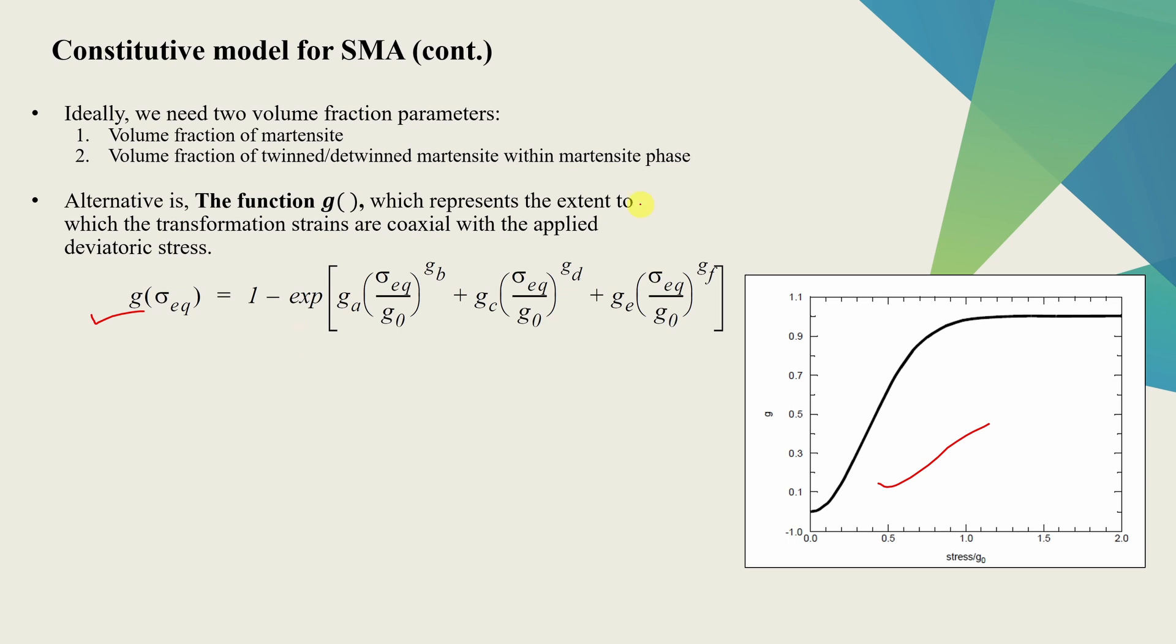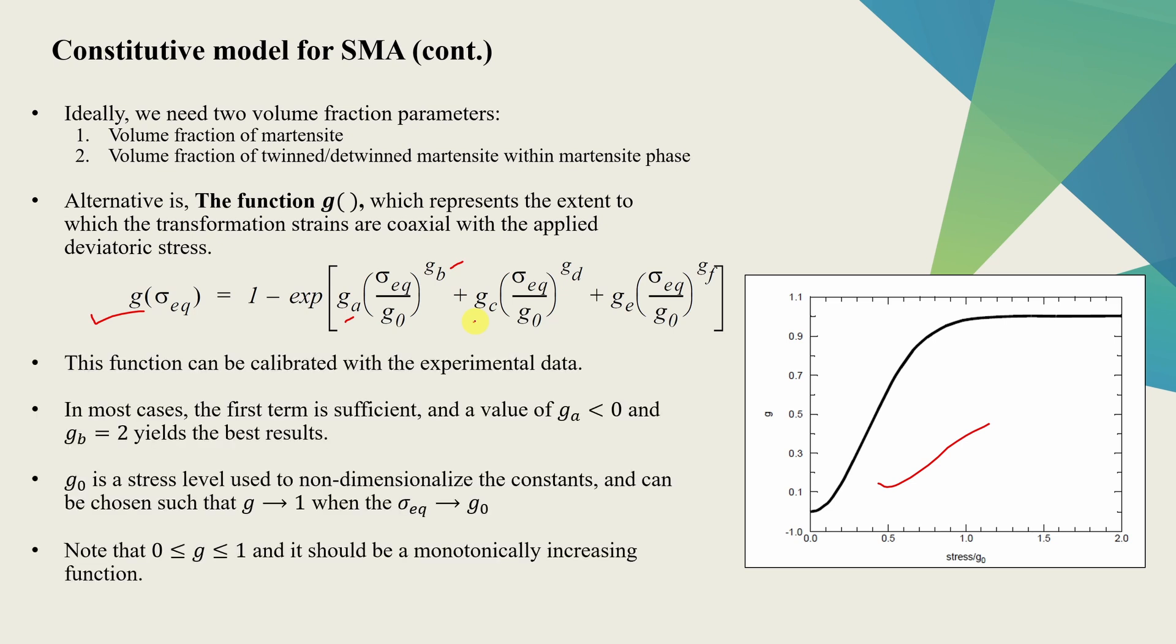And this G function is kind of alternative for explicitly modeling detwinned and twinned volume fraction of martensite. Means in reality, there can be three phases in material. One is austenite, one is twinned martensite and another is detwinned martensite. Hence we will need two volume fractions in the material model. But that increases the complexity of material model. So that's why G function is used. And when we use this, we just need one volume fraction. Here all these constants, they need to be found out by curve fitting experimental data. But MARC has given some suggestions. And in most cases, it is observed that only first term is sufficient. We can ignore the next two terms.